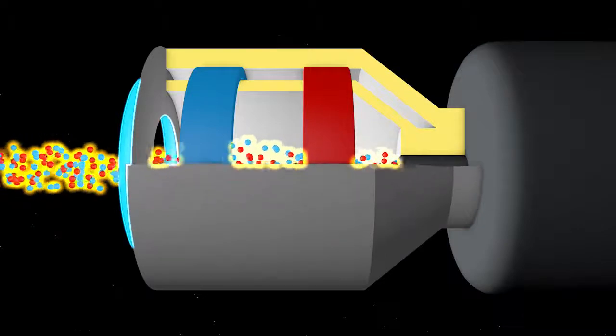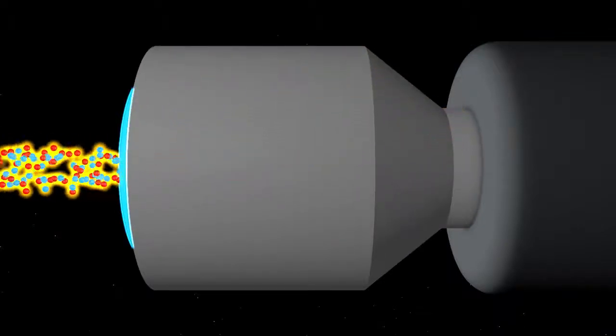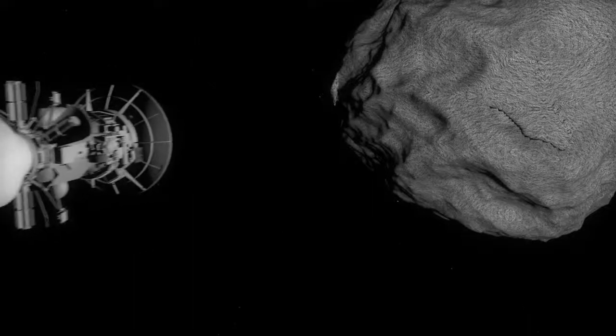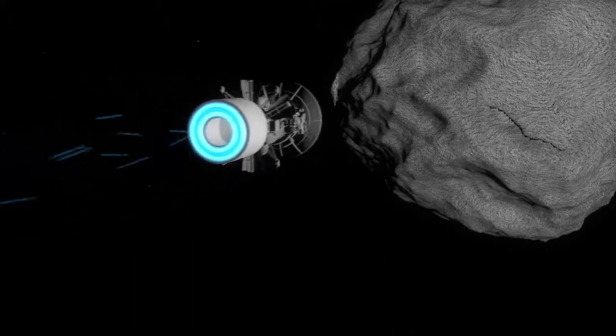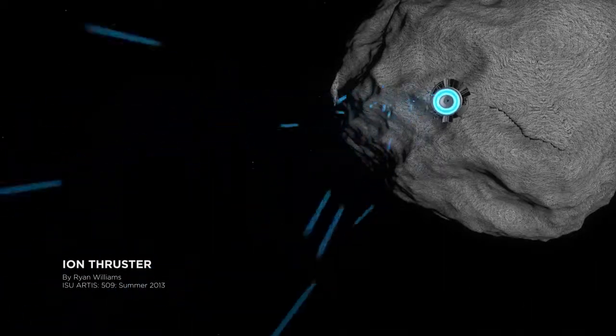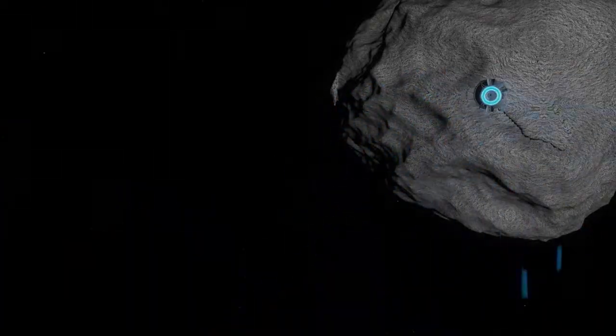Ion propulsion technology permits future spacecraft to travel on extended tours of asteroids, comets, and planetary bodies. Currently ion propulsion is being used in NASA's Project Dawn to send a spacecraft that will study asteroids.